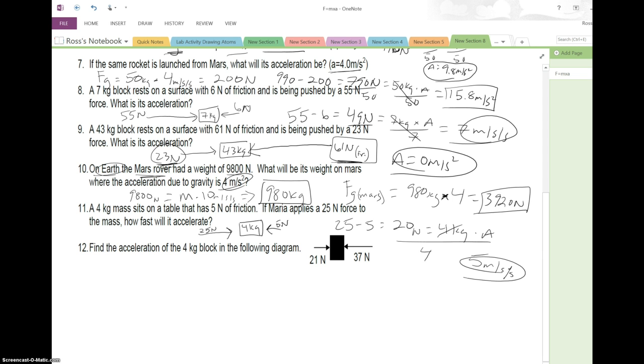Find the acceleration of the 4 kilogram block in the following diagram. So again, we've got two opposing forces. 37 minus 21 is 16 newtons, equals 4 kg times A. Divide everything by 4, cancels out. 16 divided by 4 is 4 meters per second squared. Alright?